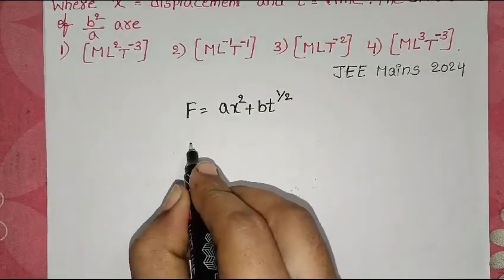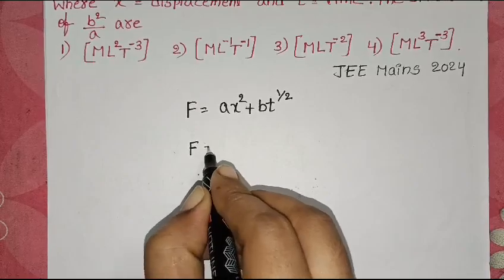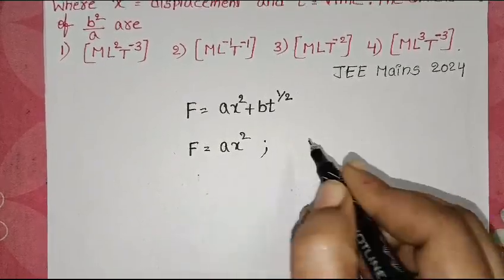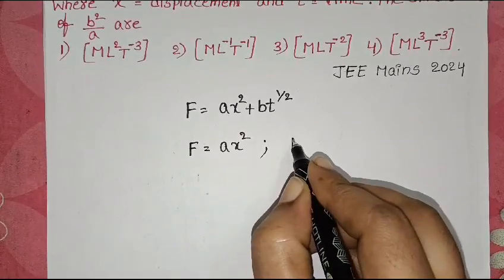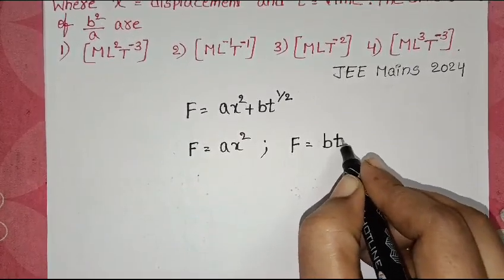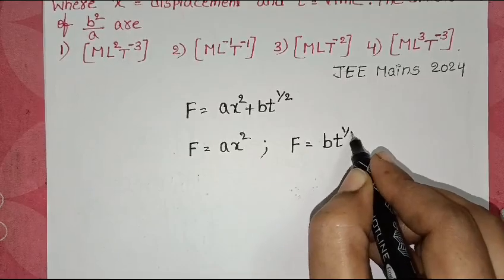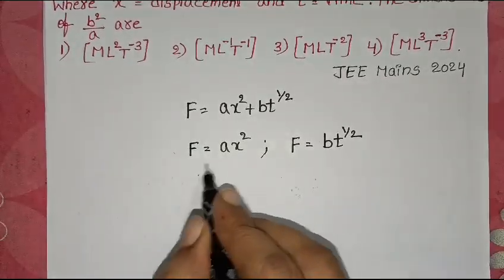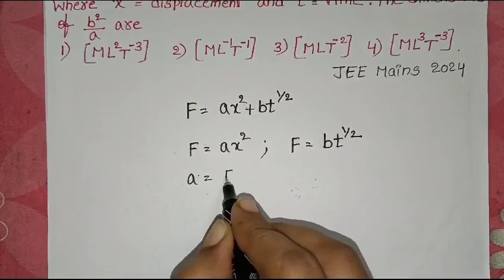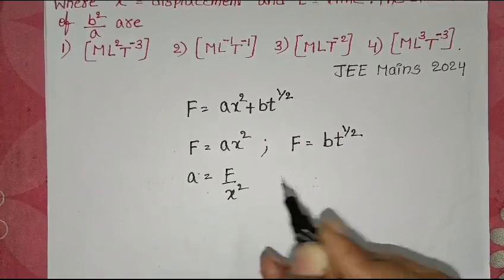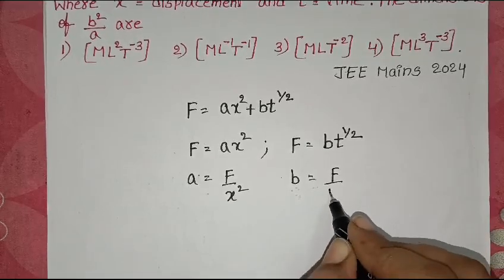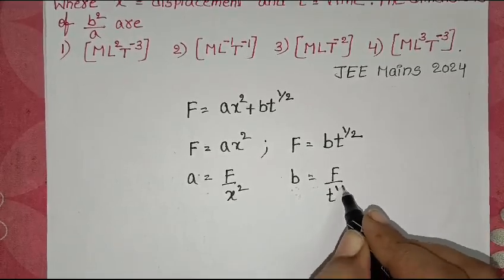The dimensions of force equal the dimensions of AX², and at the same time, dimensions of force equal dimensions of BT^(1/2). From this, A equals F divided by X², and B equals F divided by T^(1/2).